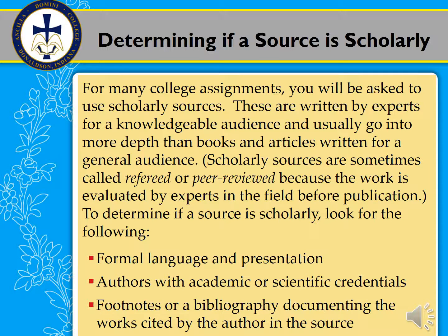Your best bet is to find scholarly sources as much as you can. Those won't always be without bias, but usually at least the research is solid — you can trust the research even if you disagree with their conclusions. That's what scholarship is all about: disagreeing but still having good research. So here are some ways that you can determine if a source is scholarly. We've looked in our class before at peer-reviewed sources and what that means, and the editorial process — also called refereed. Here are some things you can look for. First is formal language and presentation.